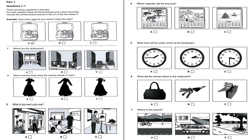Now open your question paper and look at part one. There are seven questions in this part. For each question, there are three pictures and a short recording. Choose the correct picture and put a tick in the box below it.